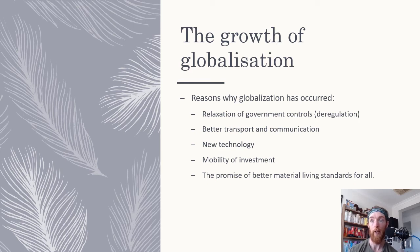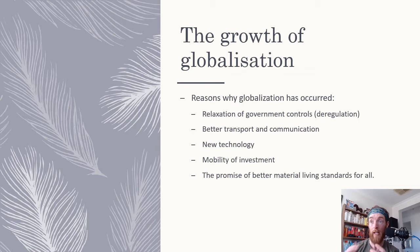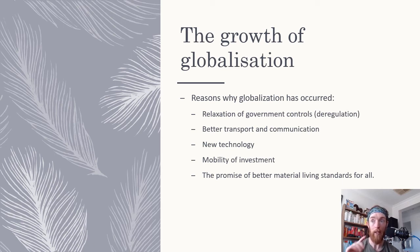We've got mobility of investment — if a country is no longer happy with production costs in one country, they can move offshore. A lot of call centers and production have moved to India and parts of Asia for cheaper labor. There's also the promise of better material living standards for all. If every country focuses on areas they have competitive advantages in, they'll maximize living standards. It's the reason why we don't grow rice in Australia — we're not good at it. We'll buy it from places that do, while Australia excels at wool, beef, barley, wheat, and iron ore.